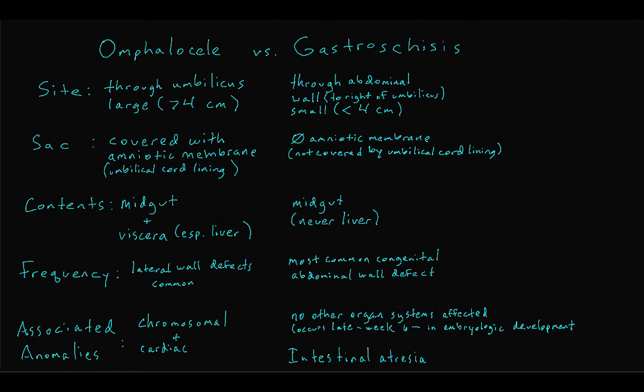Here is a summary table comparing the characteristics of omphalocele versus gastroschisis. An easy way to remember things is that in omphalocele, you have a bad baby with good bowel, and in gastroschisis, you have a good baby with bad bowel.